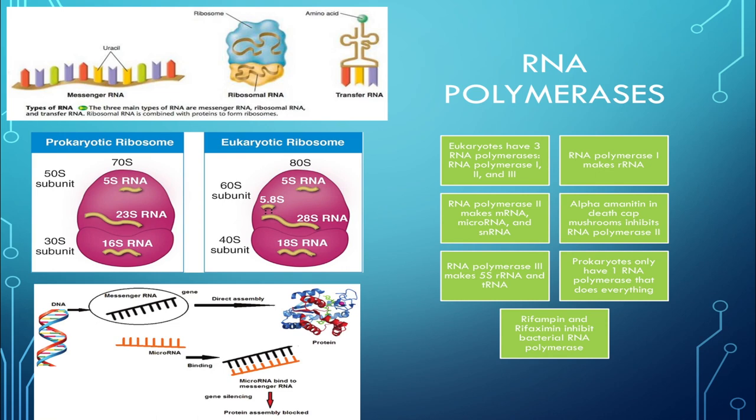Some examples: rifampin is a drug used to treat tuberculosis that inhibits the DNA-dependent RNA polymerase in prokaryotes. Another drug is rifaximin, which interferes with RNA polymerase and is sometimes used for traveler's diarrhea to inhibit bacterial RNA synthesis.